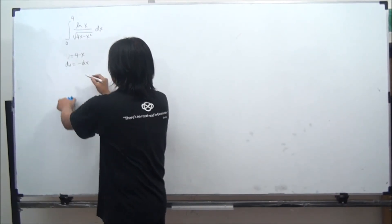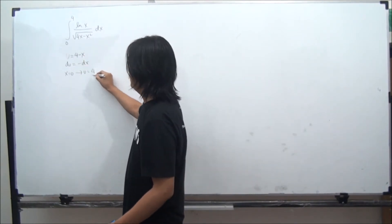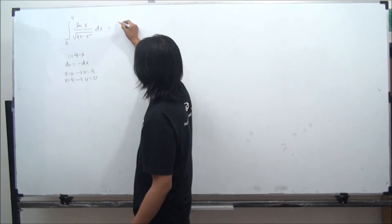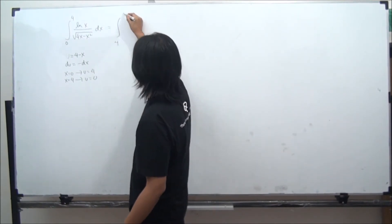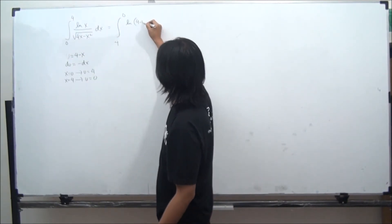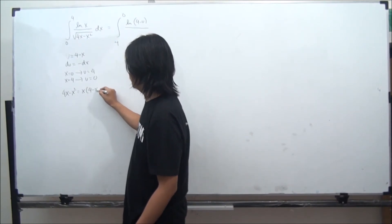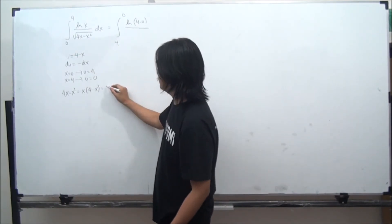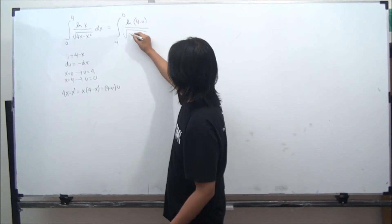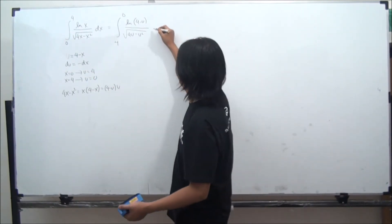When x equals 0, u equals 4. And when x equals 4, u is 0. Therefore this integral is nothing but the integral from 4 to 0 of ln of x, where x is 4 minus u. And then 4x minus x squared equals x times 4 minus x. Notice that x is 4 minus u, so this is 4 minus u, and 4 minus x turns into u. So on the bottom we have 4u minus u squared. And then du is minus dx, so dx is negative du.